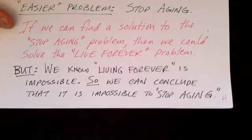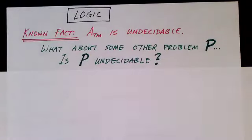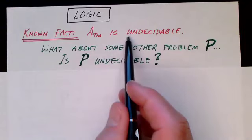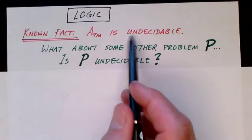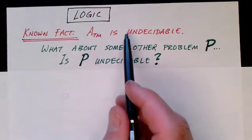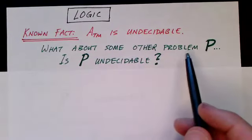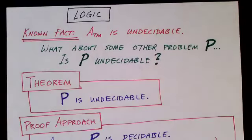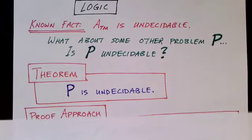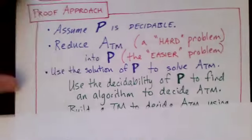Now let's turn and look more precisely at the logic we will be using. We'll start with our known fact that the acceptance problem for Turing machines is undecidable — in a previous video we proved that using a different technique. So this is our hard problem. Now, what about some other problem P? Is P undecidable? We might have a theorem that says P is undecidable, and the question is how do we prove that?